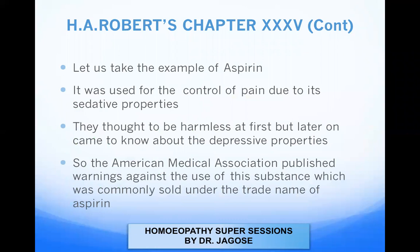In the previous Part 1, we had taken the example of synthetic drugs. In this part, Robert has taken the example of aspirin. He said that it was used for control of pain due to its sedative properties — aspirin was given and because of its sedative properties, it used to induce sleep and the pain used to get subdued. They thought it to be harmless at first, but later on came to know all about its depressive properties.